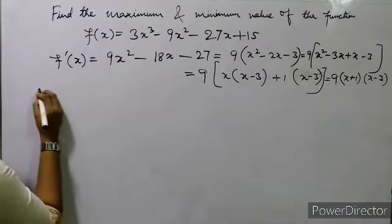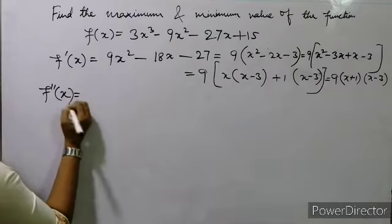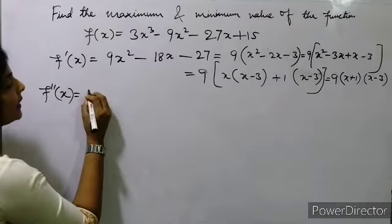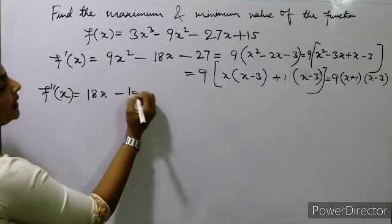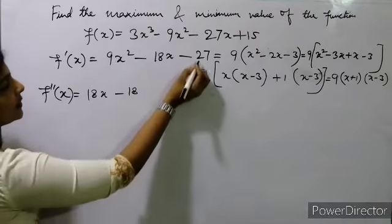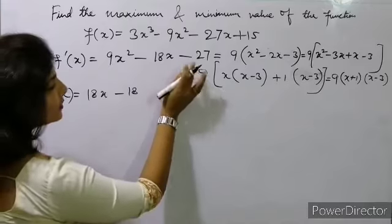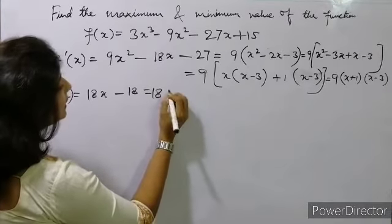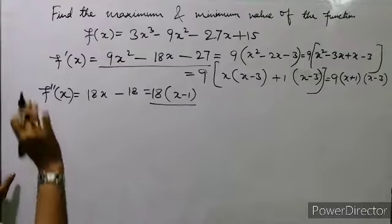Now we'll find f''(x). So f''(x) = 9×2 = 18x - 18. The constant differentiates to 0. Taking 18 common, we get 18(x - 1).